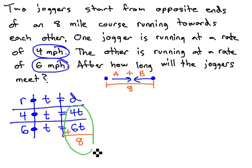This, then, last column can become an equation we can solve. The first distance, 4t, plus the second distance, 6t, equals the total distance of 8 miles.